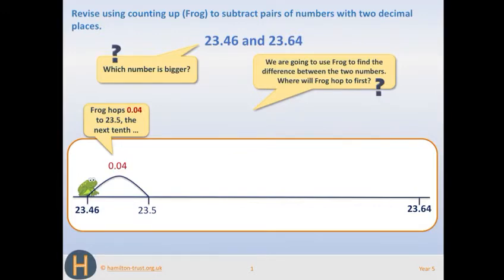This is really nice and easy. It's really quick because it's just your number bonds to 10. I know that 4 and 6 is 10. So if I add 0.04 to 23.46, I will get to my next tenth, which is 23.5. That's your first frog hop.